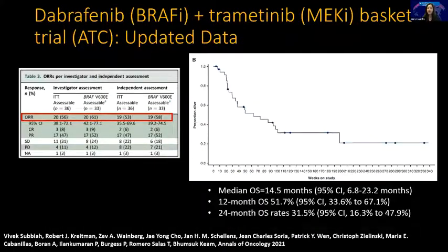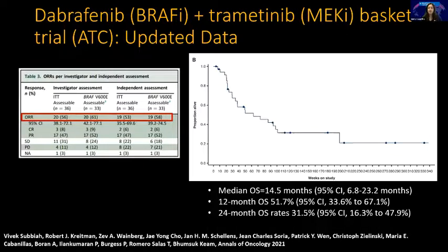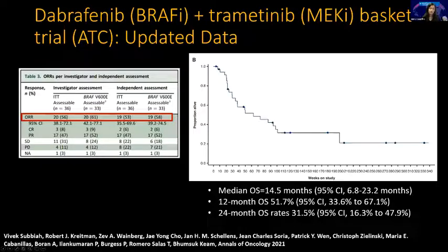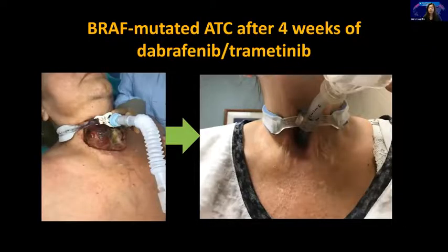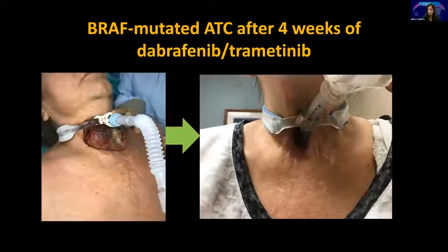Since then, the data have been updated. This is the updated data from the ROAR study — the basket trial for BRAF mutated tumors, where ATC was one of the baskets. They have now met a median overall survival of 14.5 months, which is consistent with what we see in clinical practice — after the first year we start really losing a lot of patients. These responses are absolutely phenomenal when you get them, and thankfully you get them quite a bit.